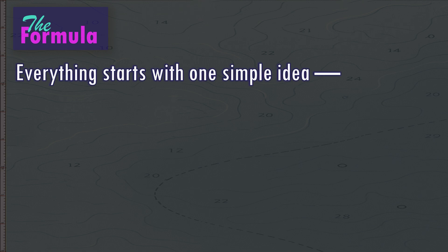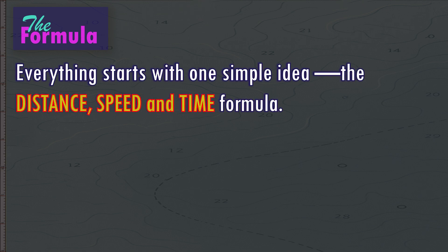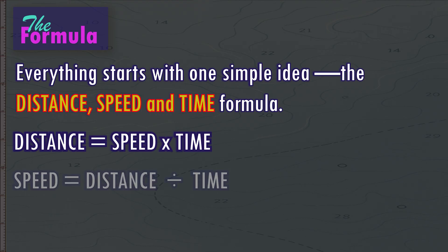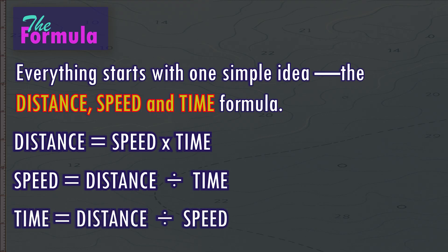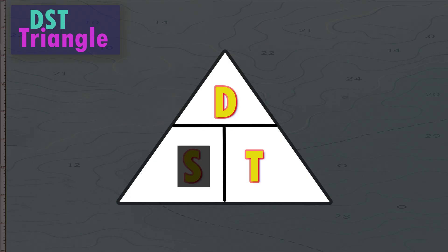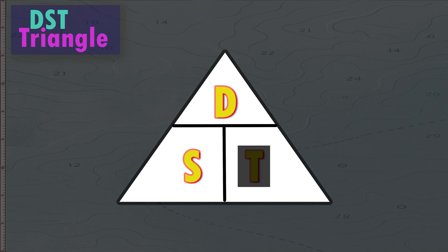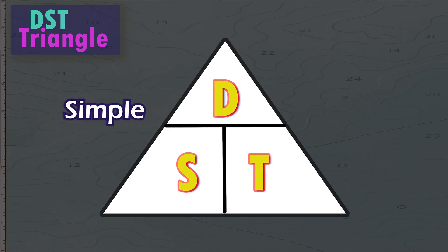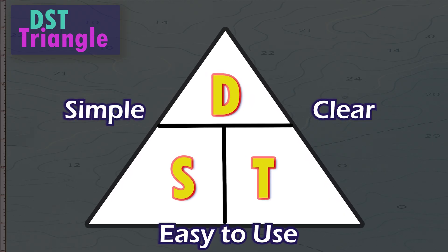Part one: the formula. Everything starts with one simple idea — the distance, speed, time formula. Distance equals speed multiplied by time. Speed equals distance divided by time. Time equals distance divided by speed. Think of it like a triangle. Cover distance and you get speed times time. Cover speed and you get distance divided by time. Cover time and you get distance divided by speed. That's the secret formula every navigator remembers — simple, clear, and easy to use any time you're solving for distance, speed or time.